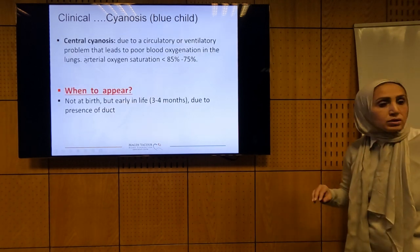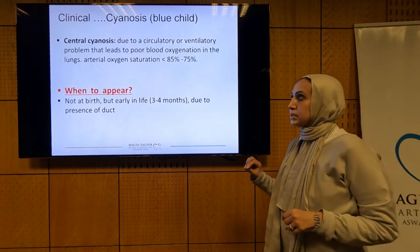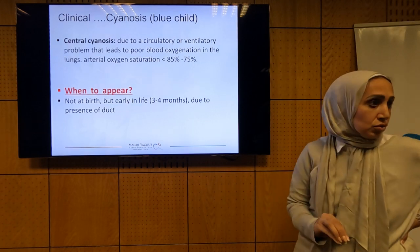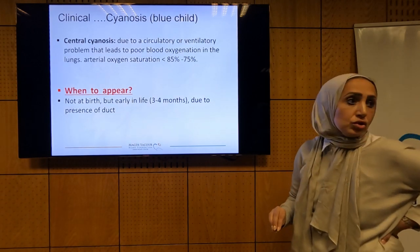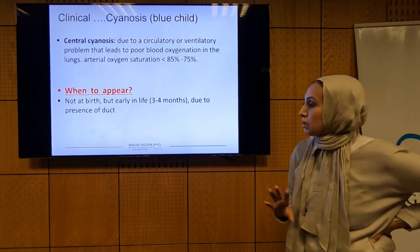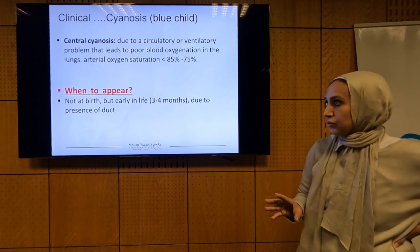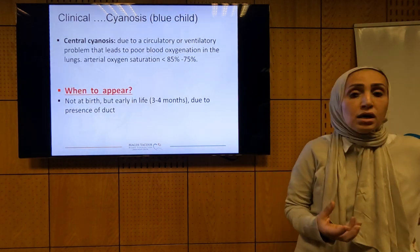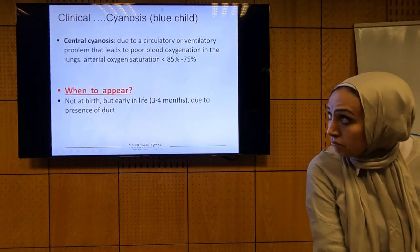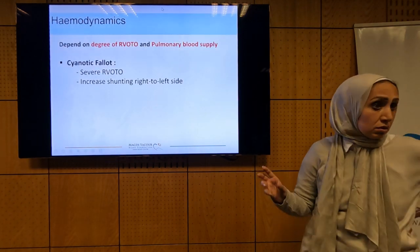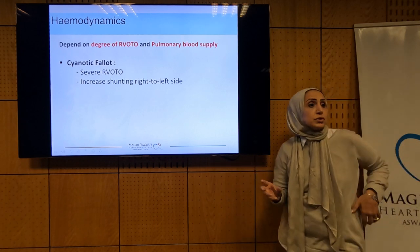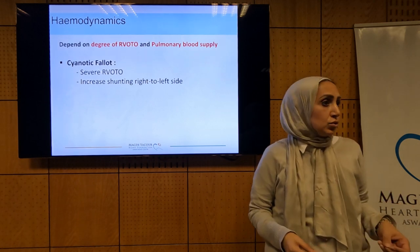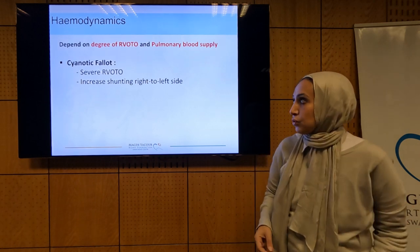We have central cyanosis — a circulatory or ventilatory problem due to decreased blood oxygenation. Arterial saturation is usually around 70–80%. It does not appear at birth; it takes some months to be recognized due to the presence of the duct. The major clinical feature in Tetralogy of Fallot is central cyanosis, mainly due to decreased pulmonary blood flow.